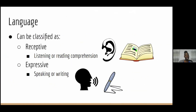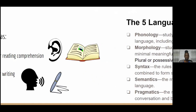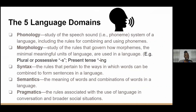Language can be classified as receptive or expressive. Receptive refers to listening or reading comprehension, and expressive means speaking or writing. In addition, we have the five language domains: phonology, morphology, syntax, semantics, and pragmatics.